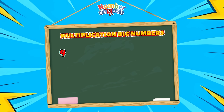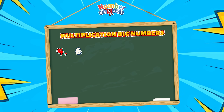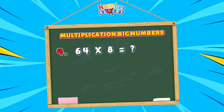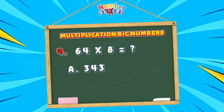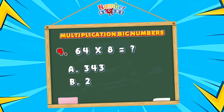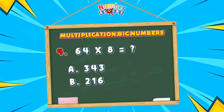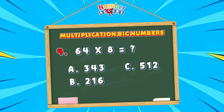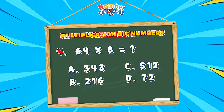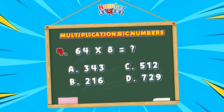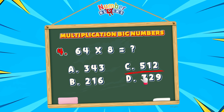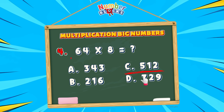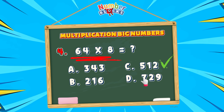And lastly, question number 4: 64 multiplied by 8 is equals to... A, 343. B, 216. Or letter D, 729. If your answer is letter C, then you're correct. 64 multiplied by 8 is equals to 512.